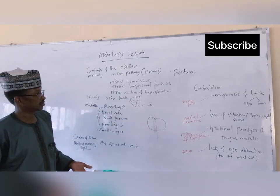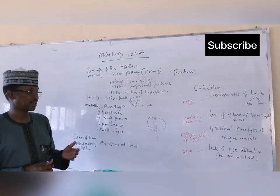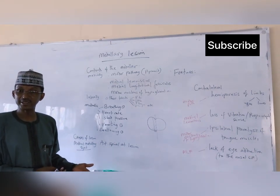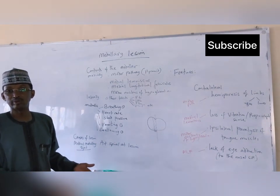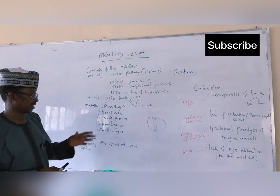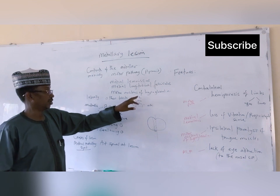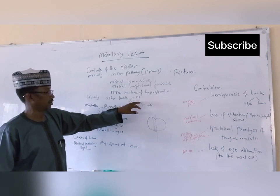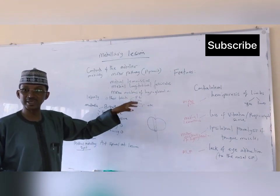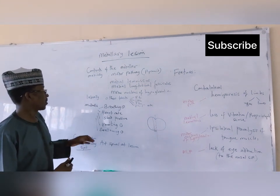From the spinal cord, there are tracts that go into other parts of the nervous system. The inferior cerebellar peduncle carries information from the spinal cord to the cerebellum through the medulla oblongata. We also have the inferior olivary nucleus, the trigeminal tract, and the vestibular cerebellar tract, all located along the lateral side of the cerebellum.